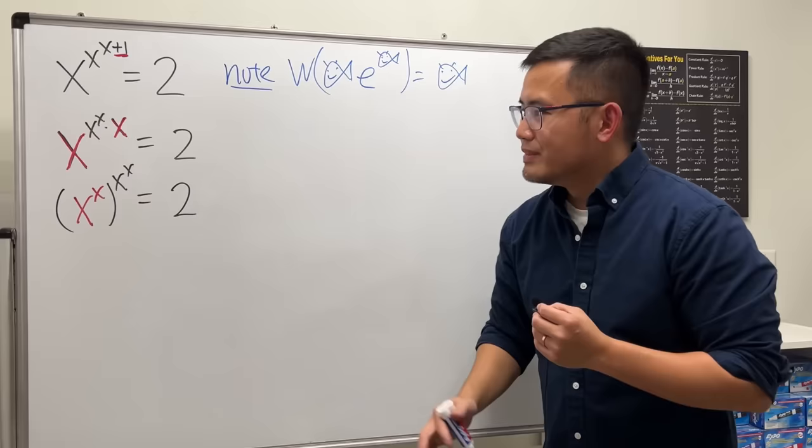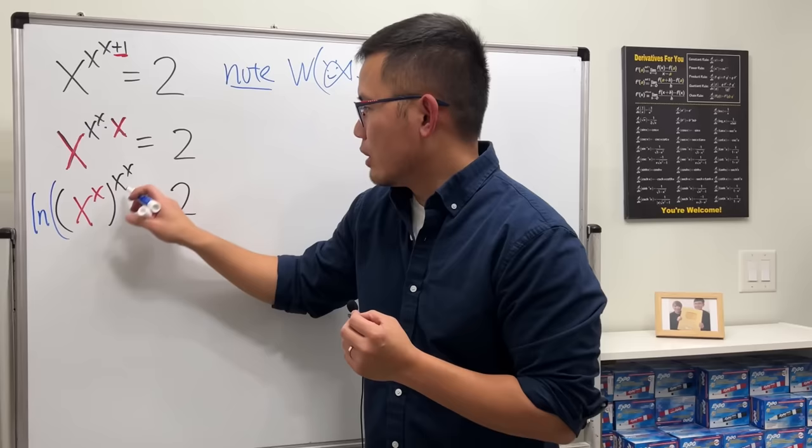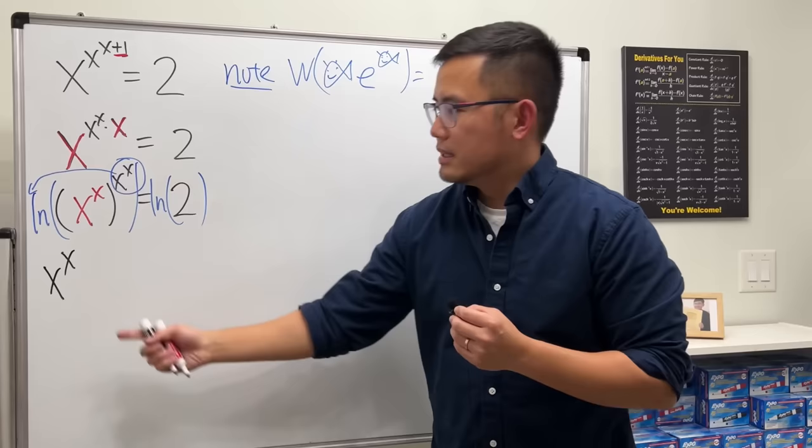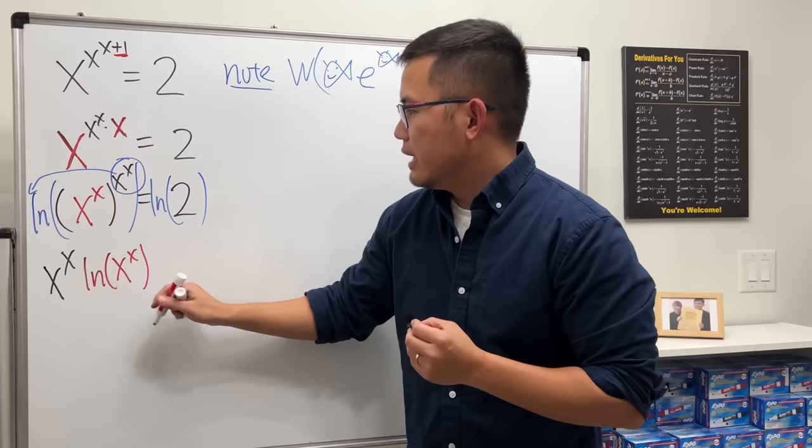First, let's go ahead and just take the natural log on both sides. This way, we can put the x to the x to the front, and we will have the x to the x times that part, which is just ln of x to the x, and that is equal to ln 2.